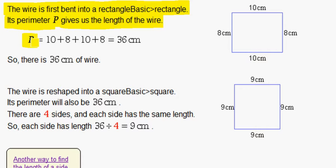The perimeter is the distance around. We have 10 plus 8 plus 10 plus 8, which equals 36 centimeters. So there is 36 centimeters of wire.